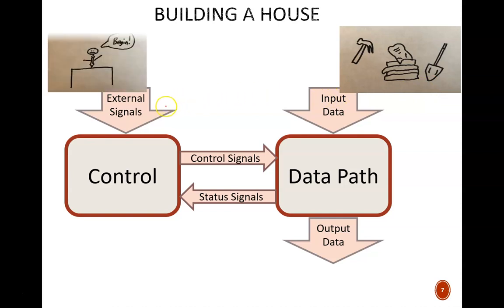The external signals would be commands telling the control to behave in some way. A very common one is a signal to begin work once all the input data is ready to go. This is represented by the big boss sitting in his office telling the crew to start building.